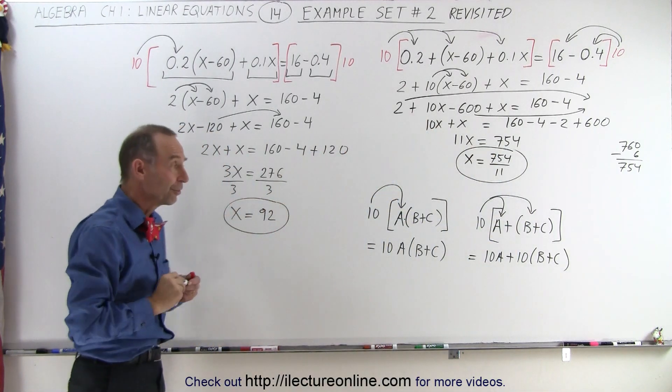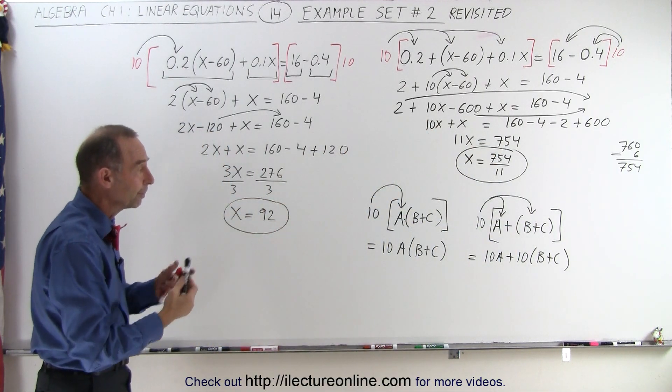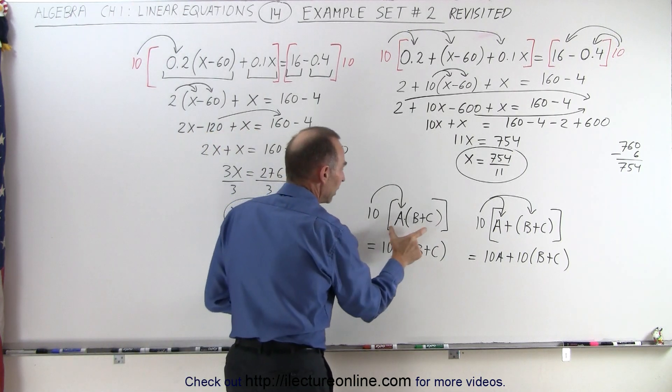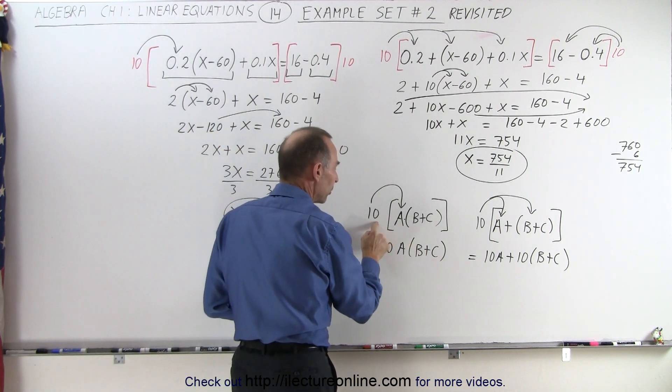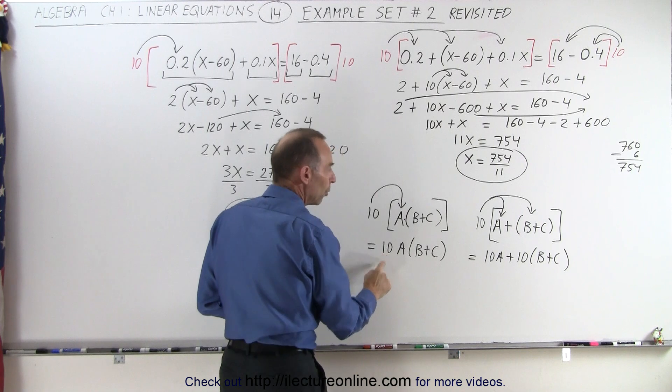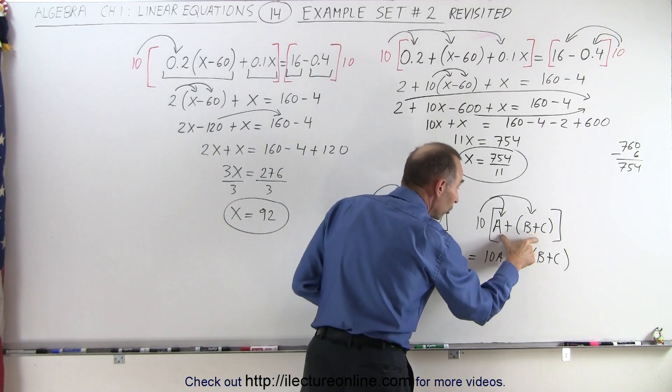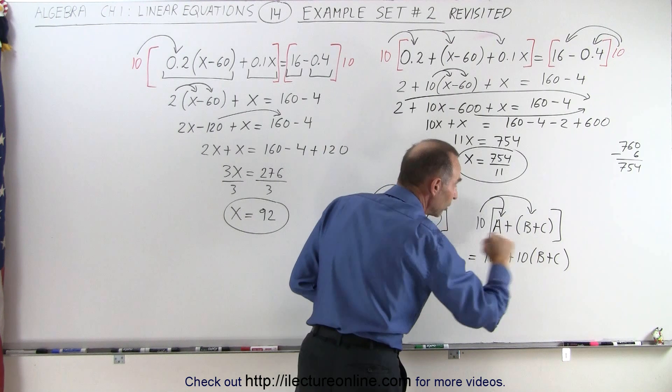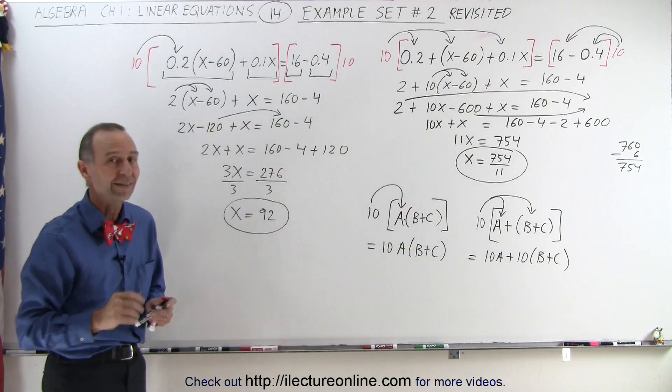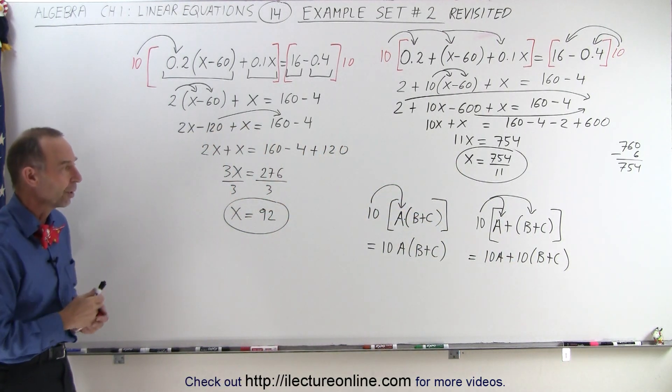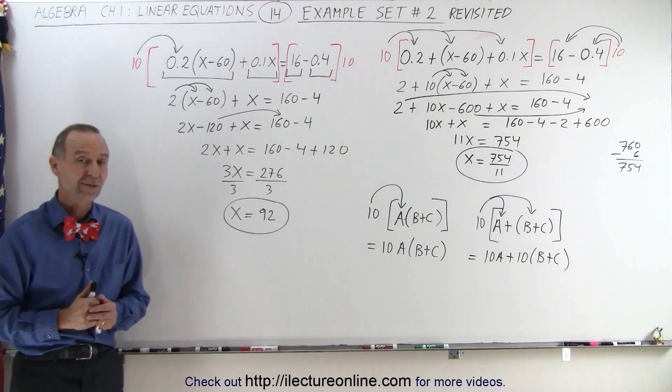So notice the very important difference and this happens a lot in algebra. When you multiply two factors with a number you just only multiply it once. When you multiply two terms with a number you do the distribution property and you multiply each term inside the brackets or parentheses with the number in front and that is how it's done.